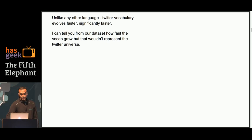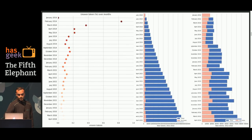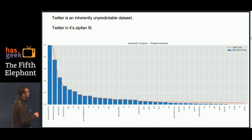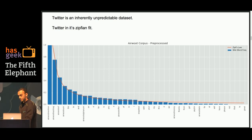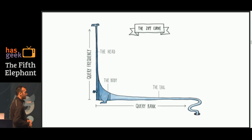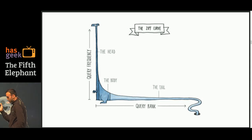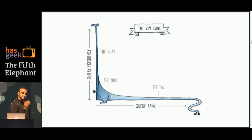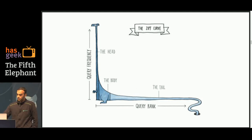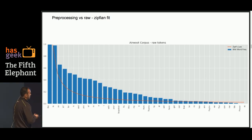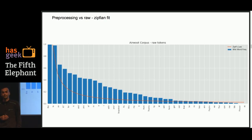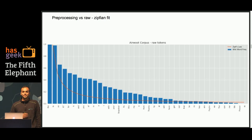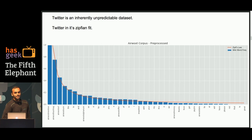Here is a Zipfian fit of a Twitter language corpus. Zipf's law holds that anything following a Zipfian distribution is perhaps normal. I'll show you another version of the same corpus where it actually violates the Zipfian fit — and this is simply because the pre-processing was not handled carefully. A quick takeaway: your pre-processing can significantly increase the accuracies or what you expect from your models.